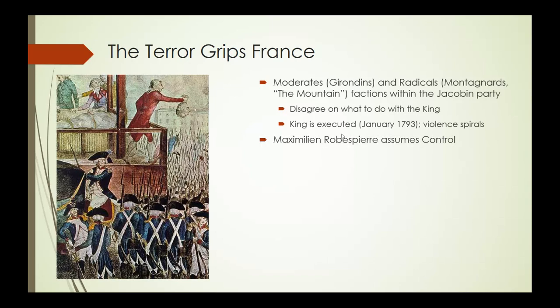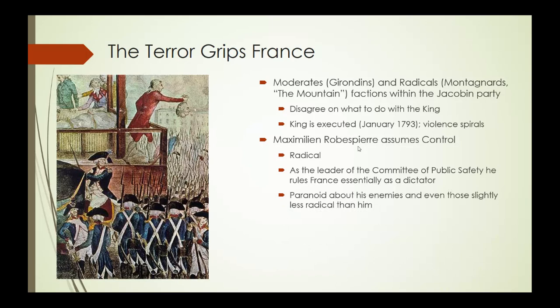At this point the violence really begins to spiral out of control. Robespierre assumes control of the National Assembly, which he rules through a committee called the Committee of Public Safety. He rules essentially as a dictator. His justification is that the revolution has many enemies — Robespierre is incredibly paranoid — and he justifies the violence of the Terror by saying the revolution needs to kill the people who are against it so that it may continue. If you let these traitors continue to live within France, the revolution is under threat. Thousands are executed during the Reign of Terror, and eventually Robespierre himself is executed.